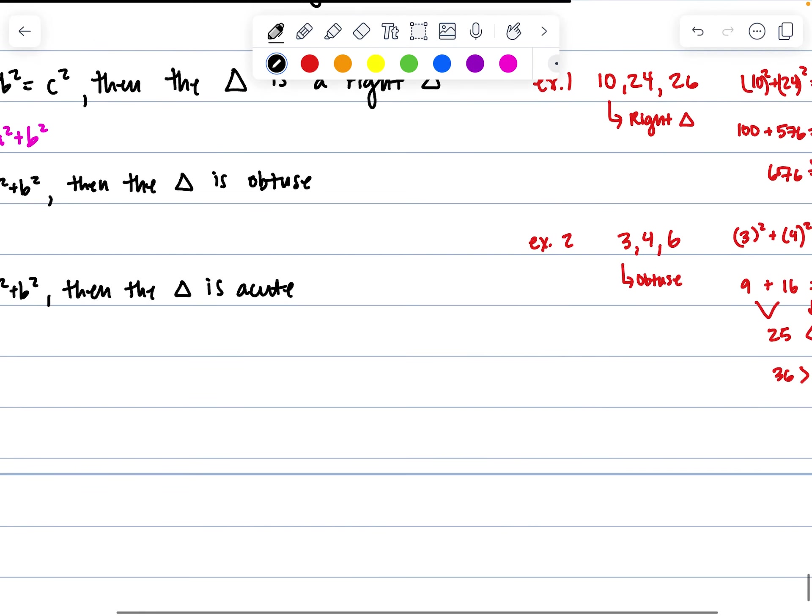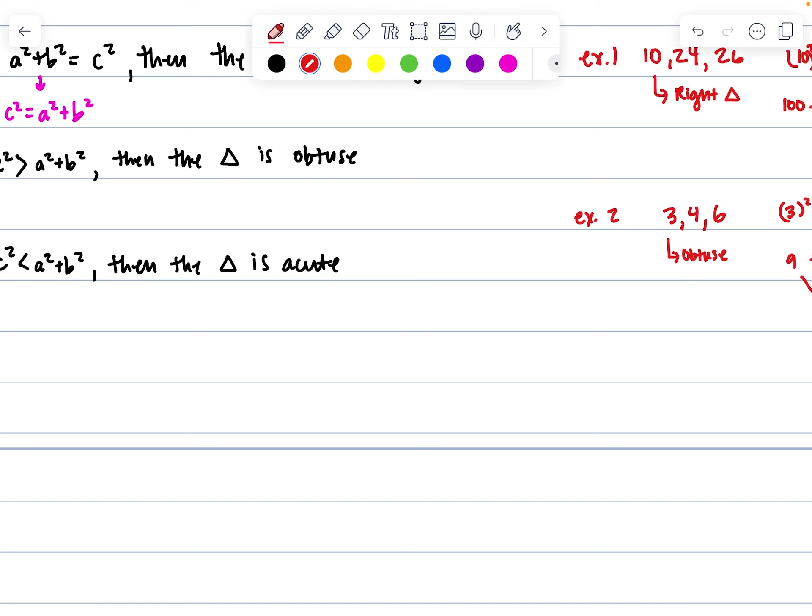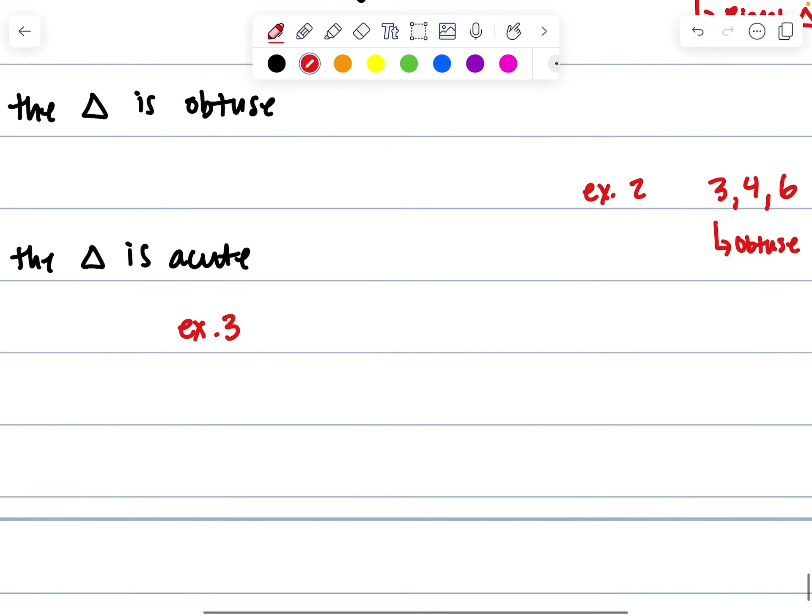And since I'm running out of room, I'm just going to put it underneath here. Example 3. So, let's say we have 6, 8, and 9. So, hypotenuse is 9, and we're going to say leg squared plus leg squared is equal to hypotenuse squared.